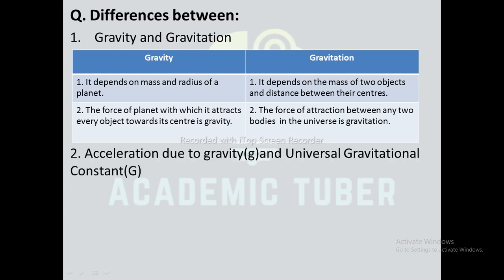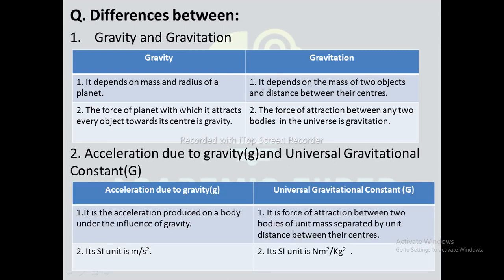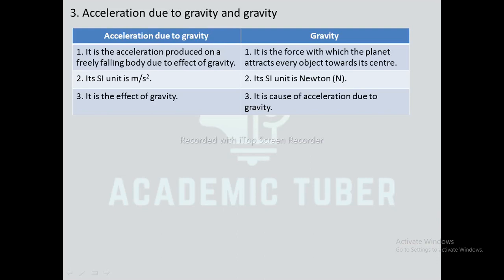Differences between acceleration due to gravity (g) and universal gravitational constant (G): acceleration due to gravity is the acceleration produced on a body under the influence of gravity, whereas G is the force of attraction between two bodies of unit masses separated by unit distance. The SI unit of g is m/s² and that of G is Nm²/kg². Acceleration due to gravity is not a constant quantity (varies with place), whereas G is a universal constant.